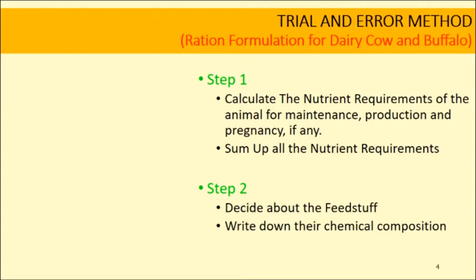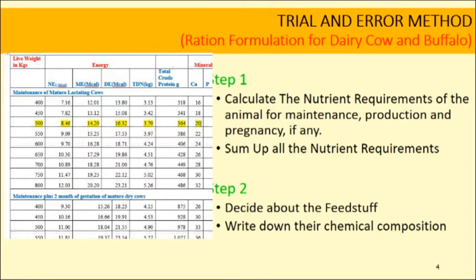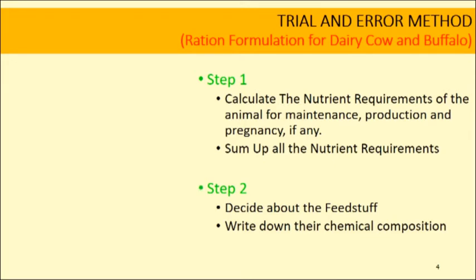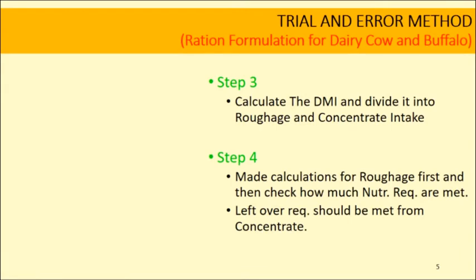For formulating a diet using the trial and error method: Step 1, calculate the nutrient requirements for maintenance, production, and pregnancy, then sum all requirements. Step 2, decide on feed stuffs — enlist available feed stuffs and their chemical composition. Step 3, calculate dry matter intake and divide it into roughage and concentrate. Step 4, calculate nutrients provided first by roughages, then the leftover nutrient requirement is met from the concentrate.